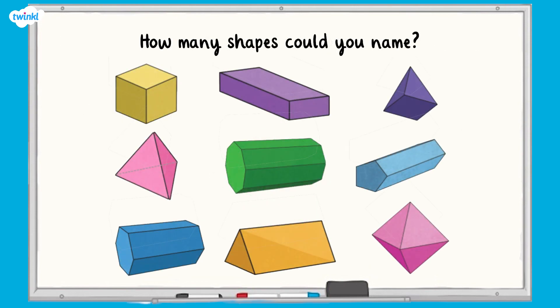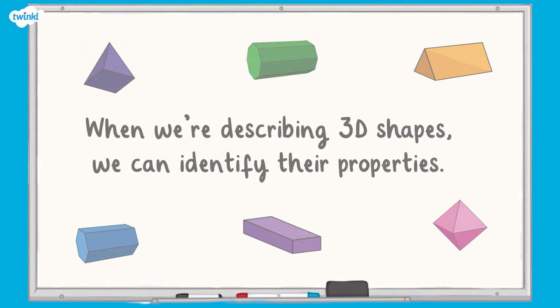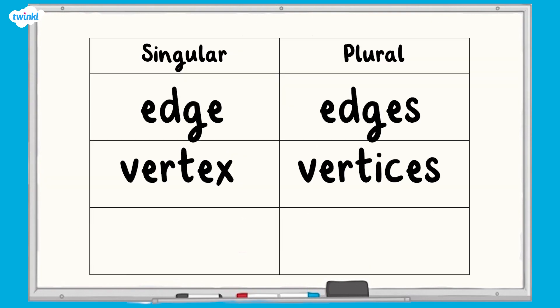How many of the shapes could you name? Now that we've recognized and named the shapes, let's have a look at how we can describe them. When we're describing 3D shapes, we can identify their properties. We can say how many edges, how many vertices, and how many faces a shape has, and what 2D shape the faces are. Vertex is the singular form and vertices is the plural form.